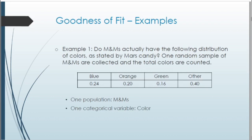A couple of examples of what a goodness of fit test might look like. First example: do M&Ms actually have the following distribution of colors as stated by Mars Candy? One random sample of M&Ms is collected and the total colors are counted. The null distribution specifies blue is 0.24, orange is 0.20, green is 0.16, and other is 0.40. We are working with one population of M&Ms and one categorical variable — the proportion of colors. Second example: are three popular burrito joints on campus — BTB, Chipotle, and Pancheros — preferred equally often for the population of Michigan students?